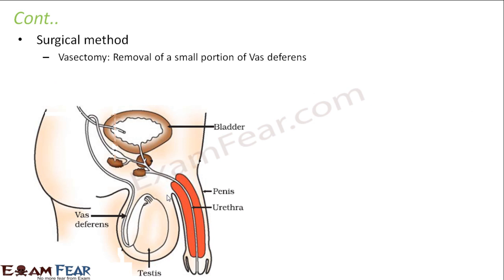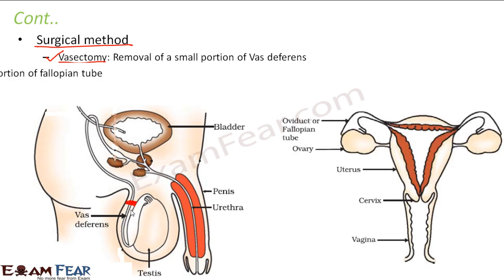There are also surgical methods by which pregnancy can be avoided. One surgical method for males is called vasectomy — the removal of a small portion of the vas deferens. The vas deferens is the tube that carries sperm. When a small portion of this tube is cut and removed, the sperm cannot be carried or ejaculated, so there is no fertilization and no pregnancy.